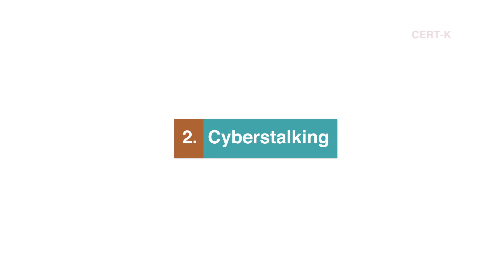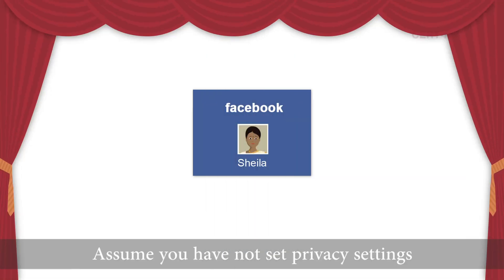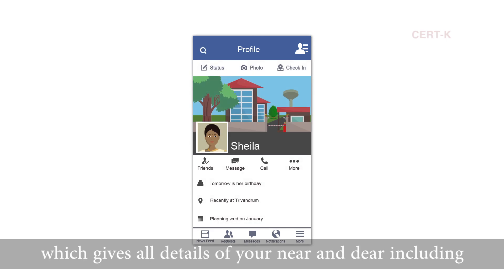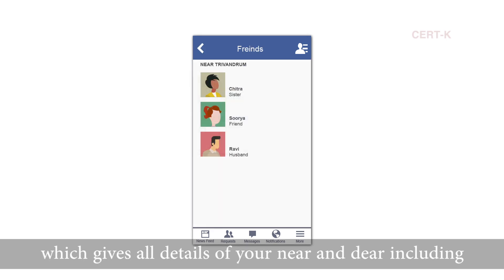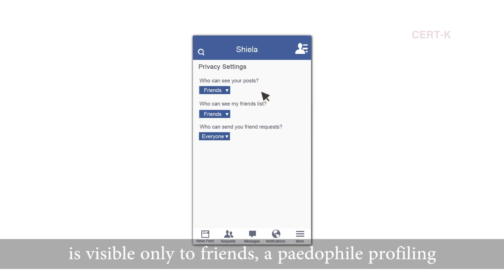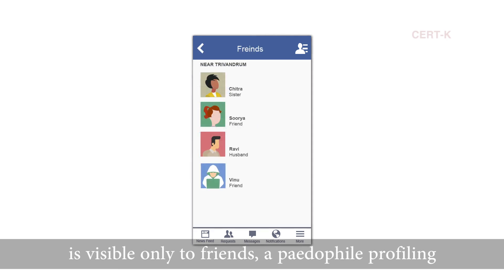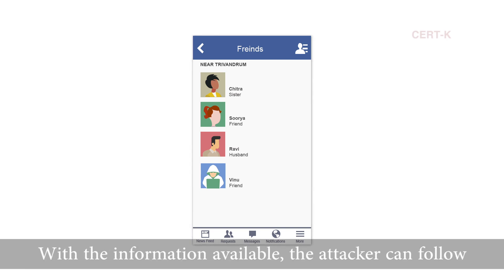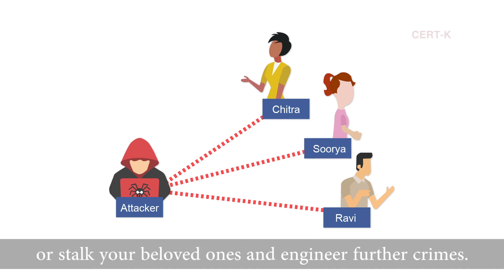Cyber Stalking. Assume you have not set privacy settings in your Facebook profile. This will enable anyone to view your personal profile, which gives all details of your near and dear including names of children, school and photos. Even if you have set privacy such that information is visible only to friends, a pedophile profiling you can get inside your circle using a fake friend request. With the information available, the attacker can follow or stalk your loved ones and engineer further crimes.